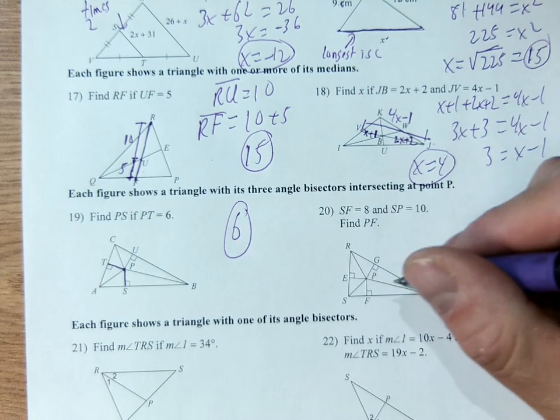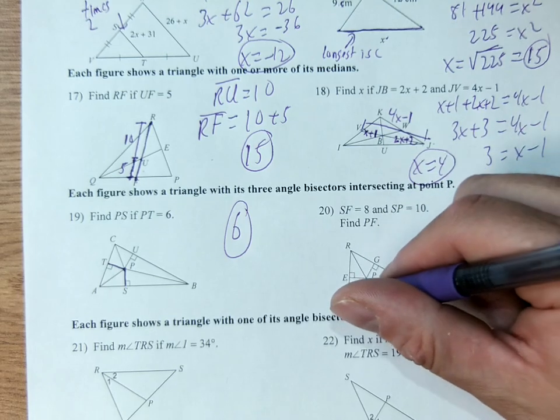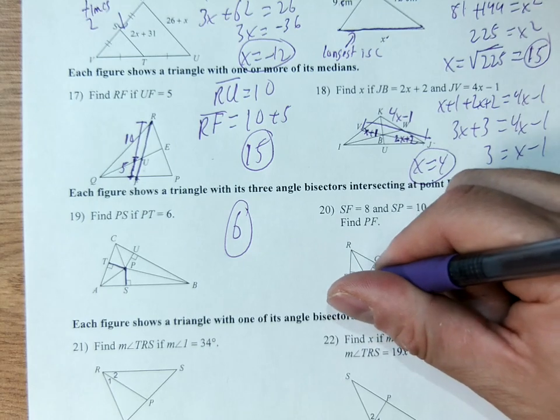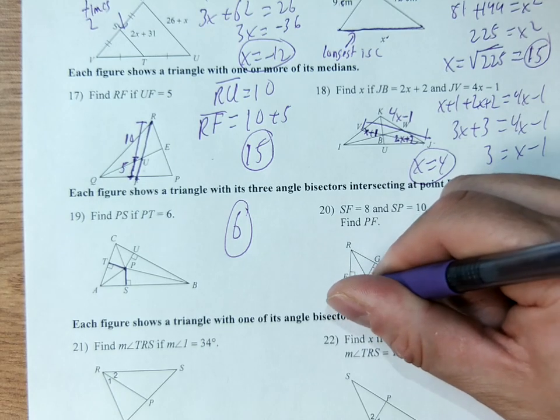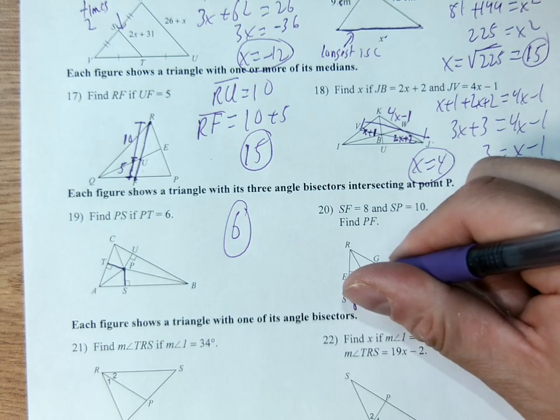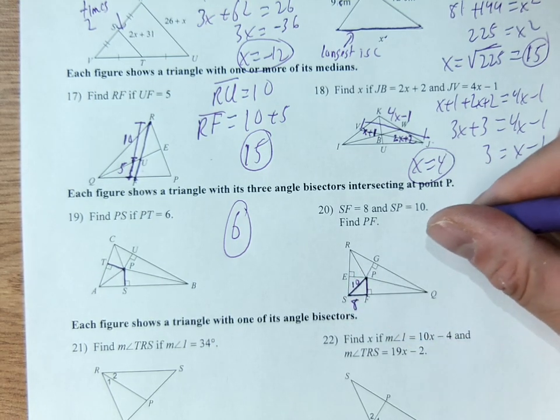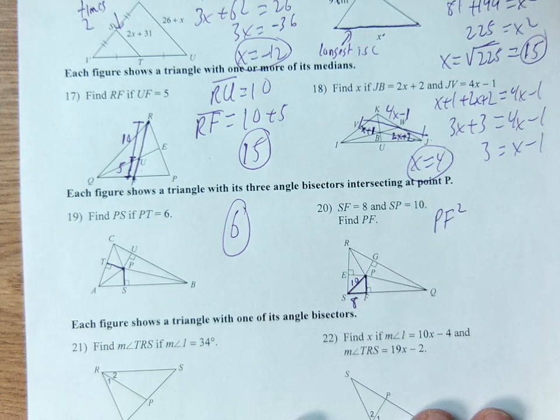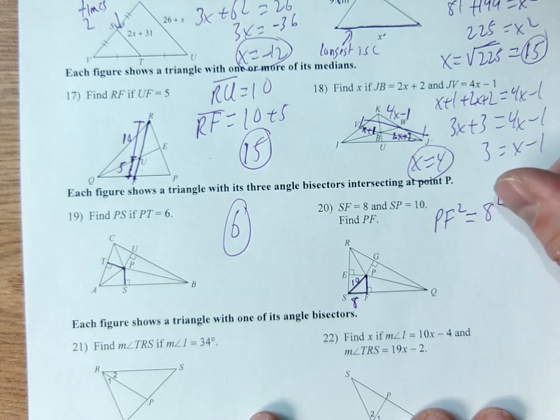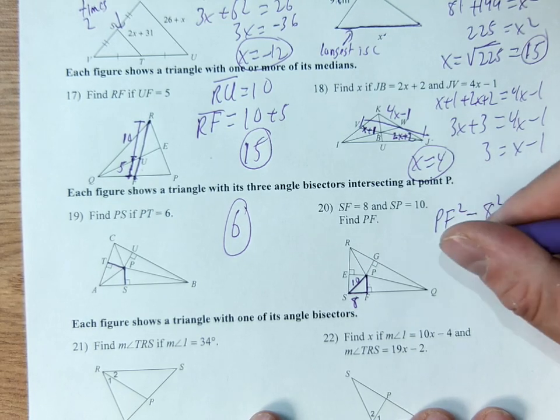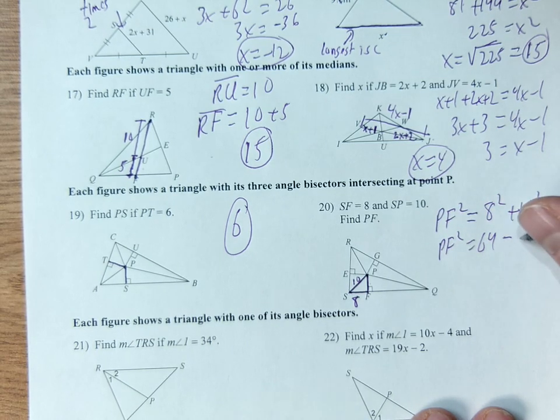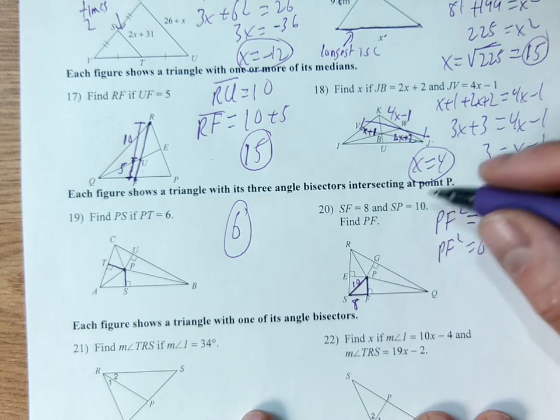This one is the Pythagorean theorem. So SF is 8, this is 8. SP is 10. So we've got 8 and 10. We've got the hypotenuse and one of the legs. I'm looking for the other leg, PF. So PF squared, you can call it x if you want, is equal to 8 squared plus 10 squared. 8 squared is 64.